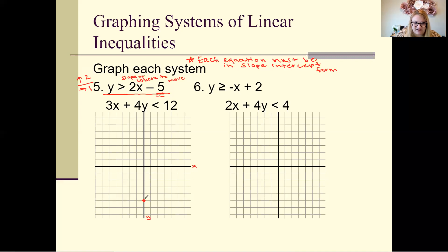From negative 5, go up 1, 2 and over 1, then up 1, 2 and over 1. We're going to draw a dashed line because this says greater than — it doesn't have the equal sign underneath, so we draw a dashed line.